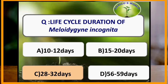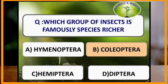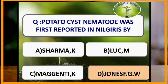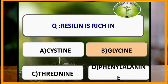The life cycle duration of Meloidogyne incognita is 28–32 days. Coleoptera is the group of insects richest in species. Potato cyst nematode was first reported in Nilgiris by Jones F.G.W. Resilin is rich in glycine.